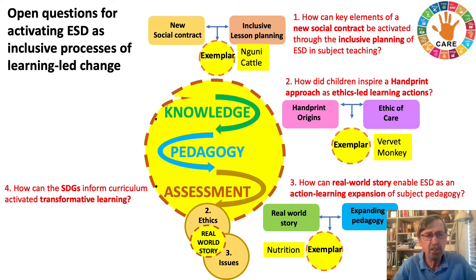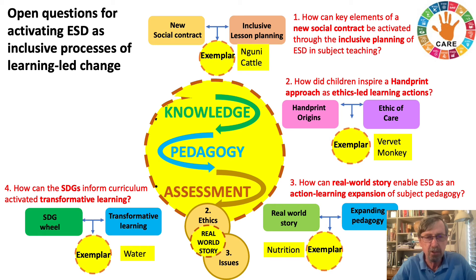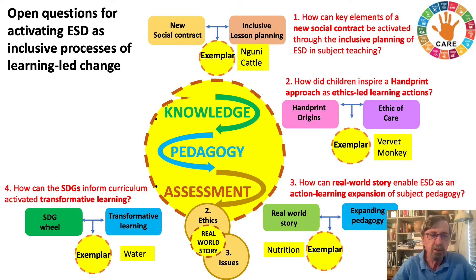How can the sustainable development goals inform curriculum to activate transformative learning was the next focus, using tools like the SDG wheel and exploring transformative learning around cultural, historical, and heritage dimensions — these being really important as foundations for understanding how the problems of the present and the issues and concerns of sustainability have come out of the histories that have produced them.